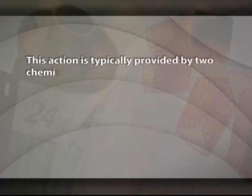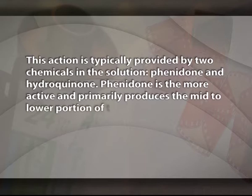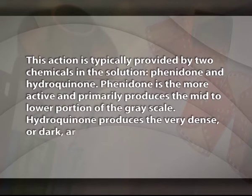Reducer. Chemical reduction of the exposed silver bromide grains is the process that converts them into visible metallic silver. This action is typically provided by two chemicals in the solution: Phenidone and hydroquinone. Phenidone is the more active and primarily produces the mid to lower portion of the grayscale. Hydroquinone produces the very dense or dark areas in an image.